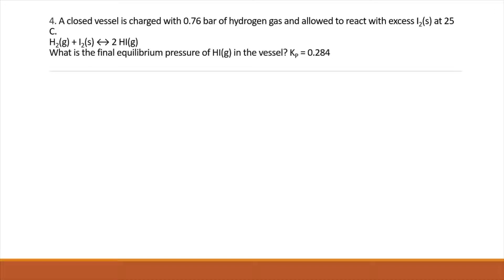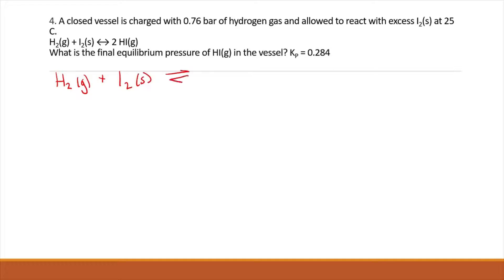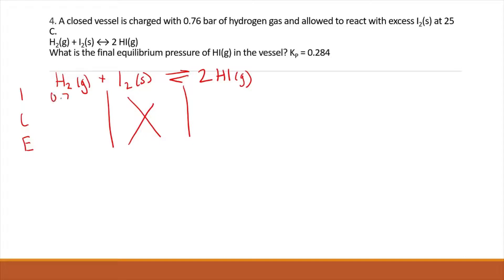Number four: a closed vessel is charged with 0.76 bar of hydrogen gas and allowed to react with excess iodine at 25 degrees Celsius. We want the final equilibrium pressure of HI in the vessel, and we're given Kp of 0.284. Let's go ahead and set up an ICE table — when in doubt, ice it out. I2 is a solid, so we don't care about it. We started with 0.76 bar of hydrogen and don't have any HI.